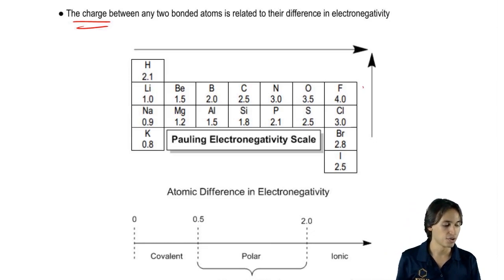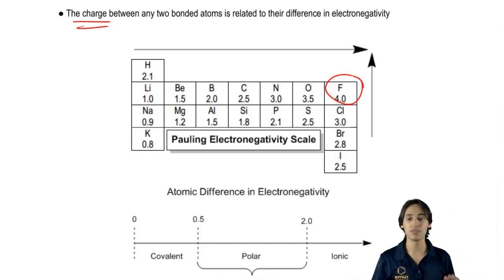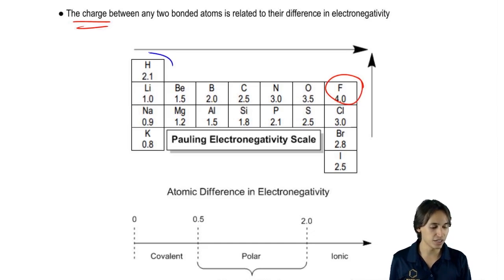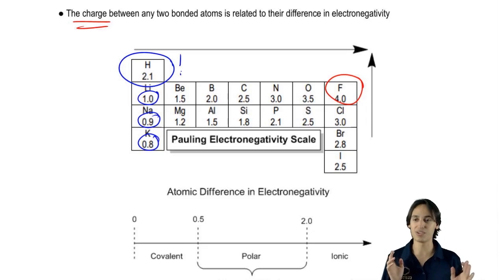Just to remind you guys, fluorine is the most electronegative. It goes all downhill from there. Another thing to point out is that hydrogen is actually unusually electronegative for where it is in the periodic table. Look what it's next to: 1, 0.9, 0.8, and then all of a sudden you get 2.1 out of nowhere. That's actually going to make hydrogen able to make covalent bonds.